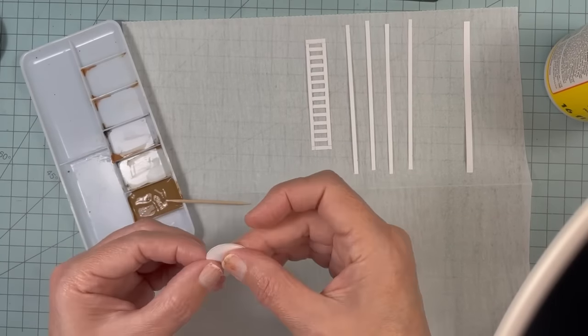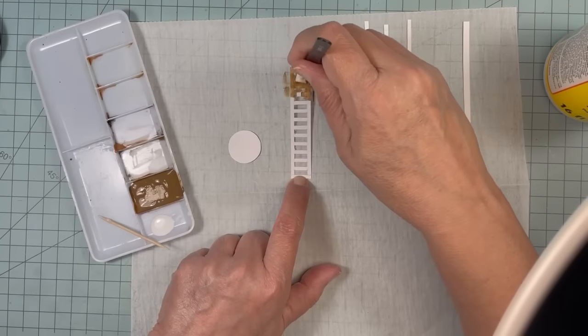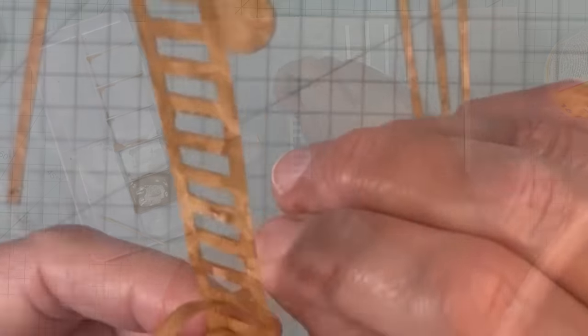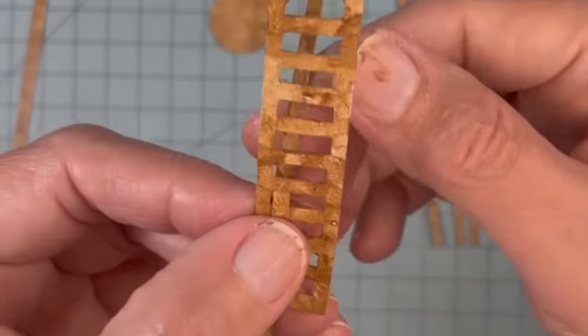Mix together a little brown paint and Mod Podge and paint all your pieces. Weave your first strip into your basket.